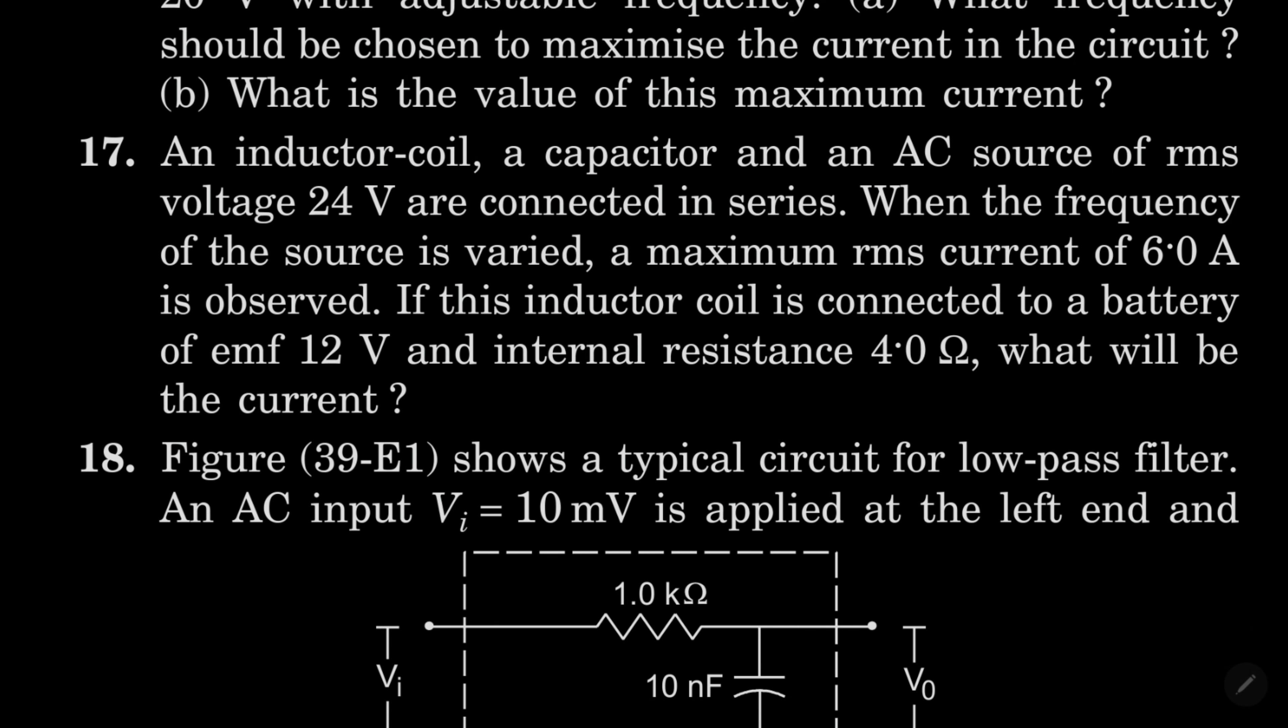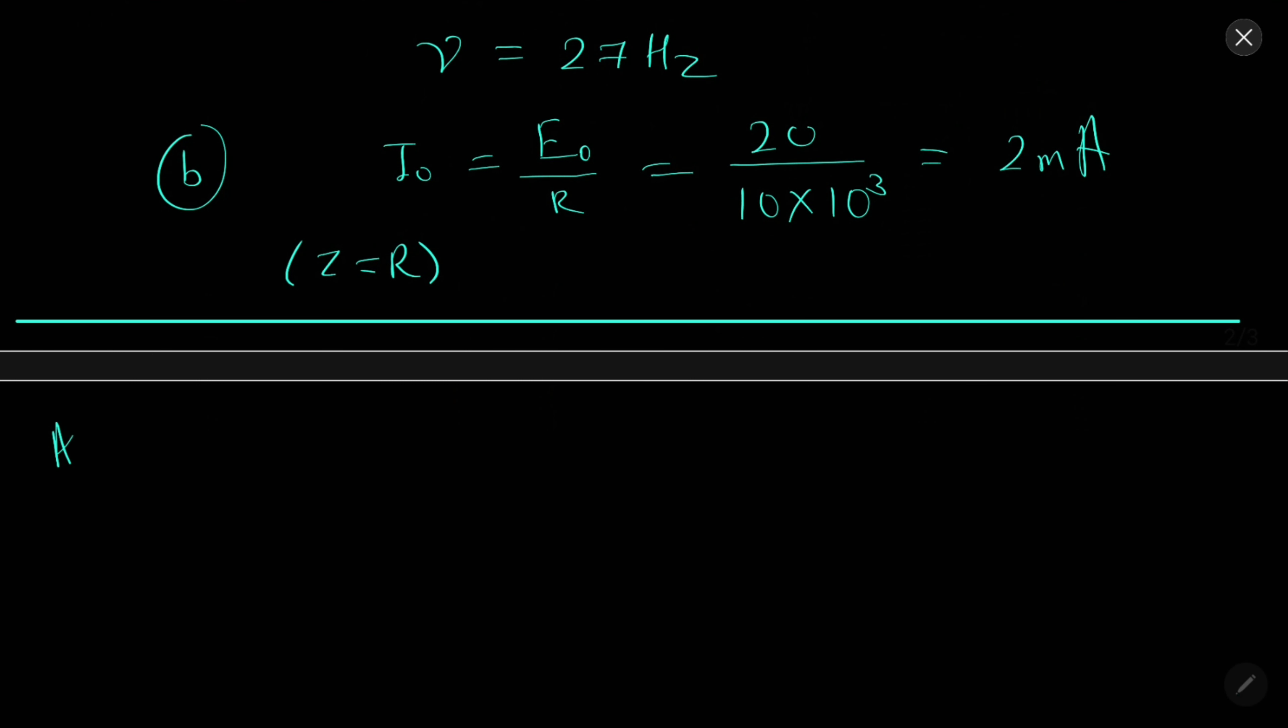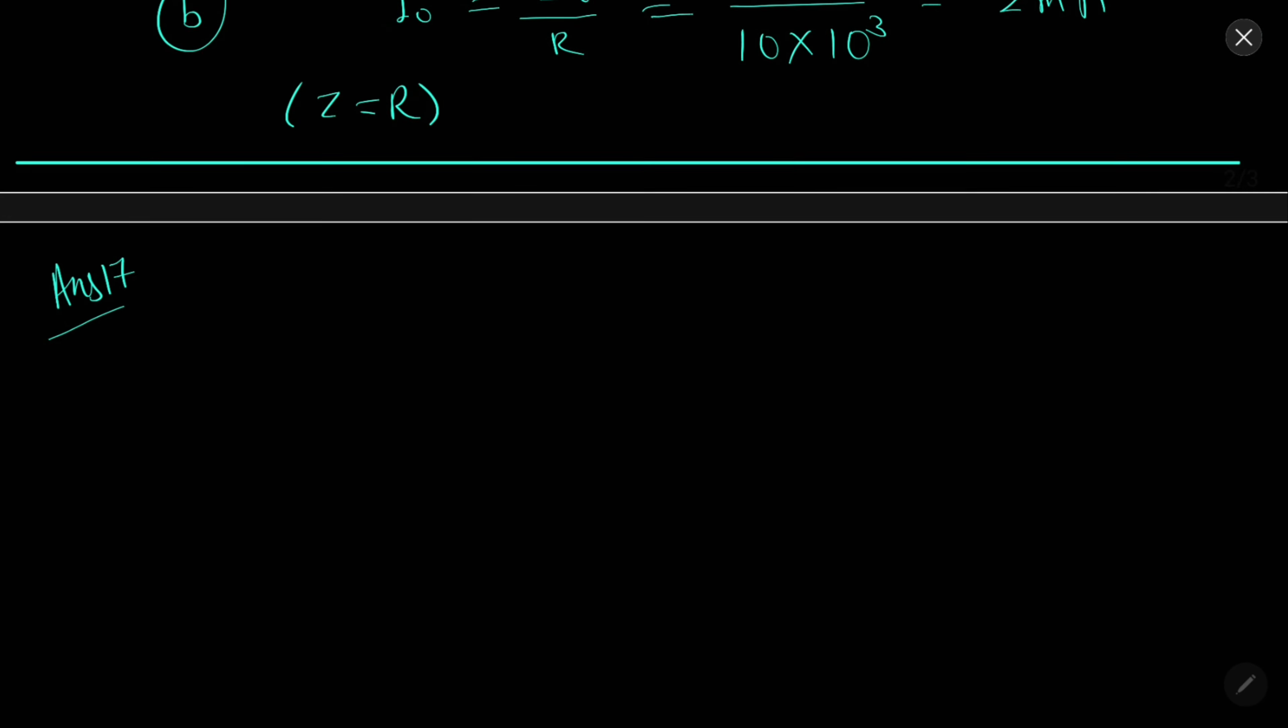In 17, when frequency of source is varied, maximum RMS current is 6 Ampere. What will be the current if inductor coil is connected to battery of EMF 12V? Solution 17: E by I is 24 by 6 equals 4 Ohms. So current will be 12 by 8 because 4 is of internal resistance, giving 1.5 Ampere.